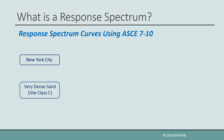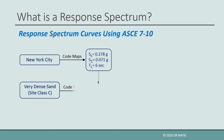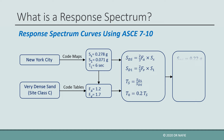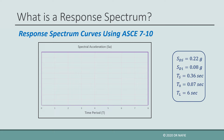First, we use the maps in the code to find the earthquake parameters for New York City, which are the short period parameter SS, the one-second parameter S1, and the long transition period TL. Then we use these values along with the soil type to obtain the parameters FA and FV from the tables in the code. Finally, we use the obtained values to calculate two response parameters, SDS and SD1, and two time periods, TS and T0. These five values — SDS, SD1, T0, TS, and TL — can be used to draw the response spectrum curve with the time period T on the x-axis and the spectral acceleration SA on the y-axis.